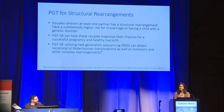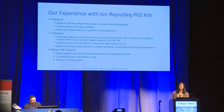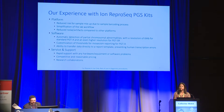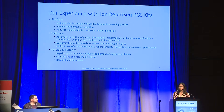PGTSR utilizing NGS can detect reciprocal or Robertsonian translocations, as well as inversions and other complex rearrangements. Our experience with ION ReproSeq PGS kits — when we opened our lab, we started right off the bat with ION Torrent. We chose it primarily because there's a reduced risk for sample mix-up due to the 96 individual barcodes, and our techs really enjoyed the simplification of the lab workflow, with reduced noise and artifacts compared to other platforms. It's pretty key to have experienced personnel who can differentiate between noise and something that should be called.